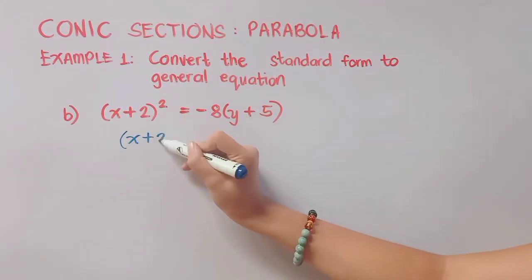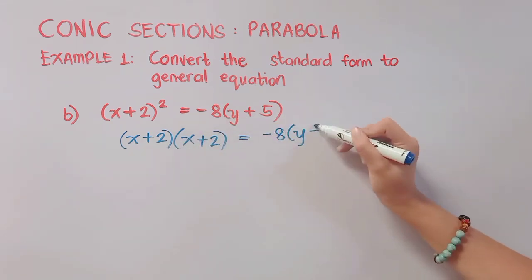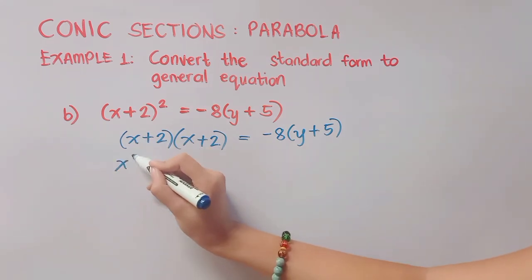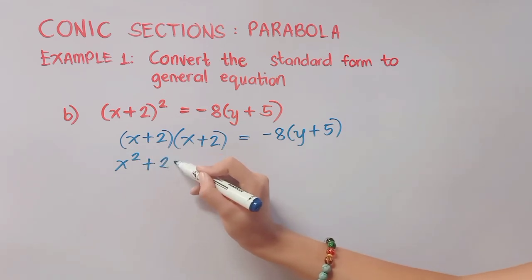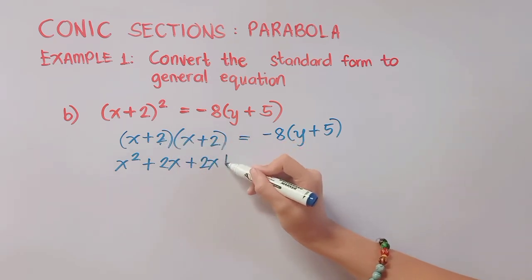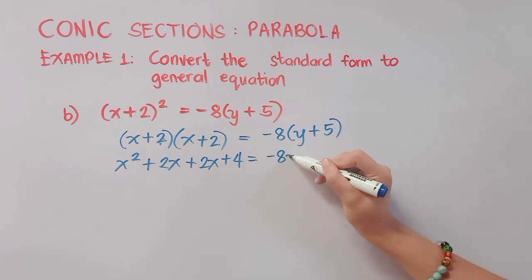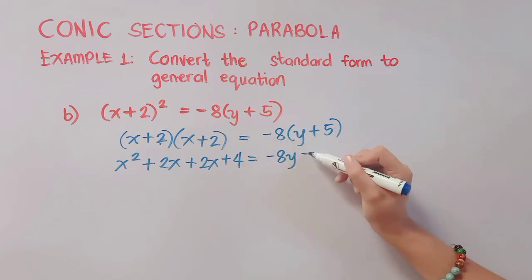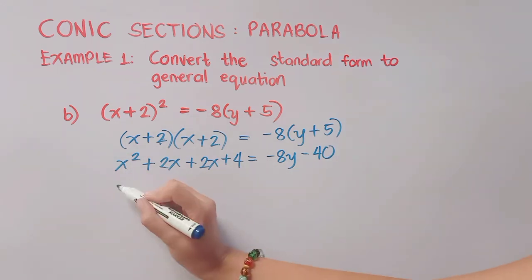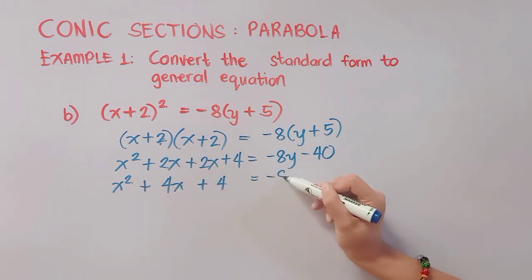Same thing in letter B. We multiply (x + 2) by itself, then copy whatever is on the right side. Using the FOIL method: x times x is x², x times 2 is 2x, 2 times x is 2x, and 2 times 2 is positive 4. We then distribute negative 8: negative 8 times y is negative 8y, and negative 8 times 5 is negative 40. Combining like terms, 2x plus 2x equals 4x.